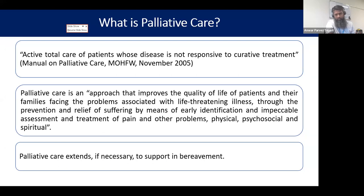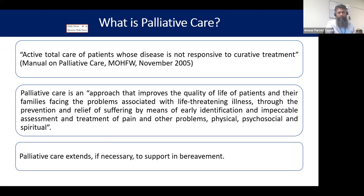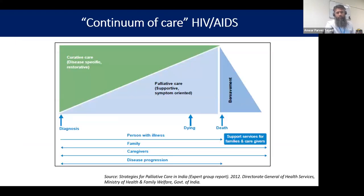The principle should be 'do no harm' — whenever we are providing any supportive care we need to make sure we are not harming the patient more than doing good. Palliative care is an approach to improve the quality of life of patients facing life-threatening illnesses, where we prevent as much agony as possible and try to reduce pain and problems in different domains: physical, psychological, spiritual, and social. It is an active total care of patients whose disease is not responding to curative treatment — and we know that HIV is not curable.